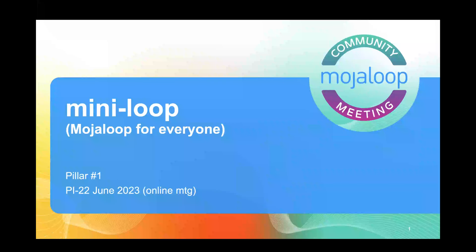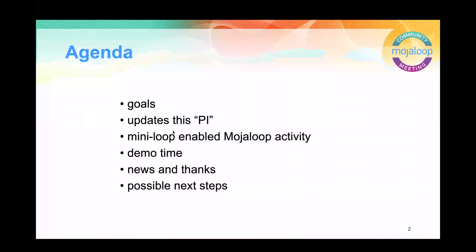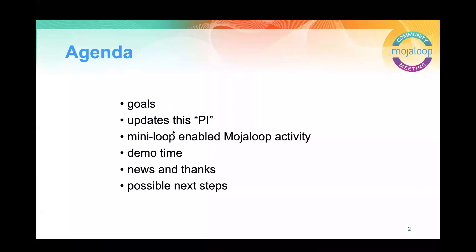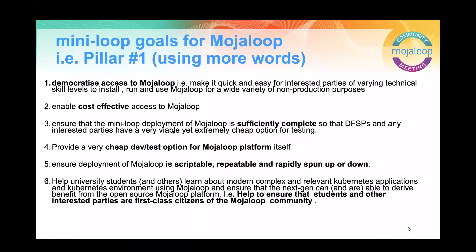Coming from enterprise operations - how good is it that we're actually talking about zero downtime upgrades? I think we must be maturing as a project. So: Mini Loop / Mojo Loop for everyone. This is Pillar One. We're going to go over goals, updates this PI, what's actually happened since last PI, Mini Loop enabled Mojo Loop activity, demos, news and thanks, and possible next steps.